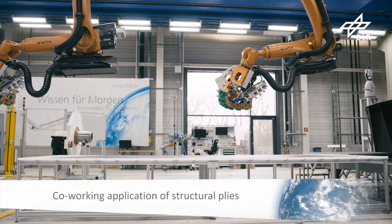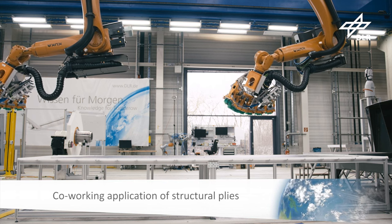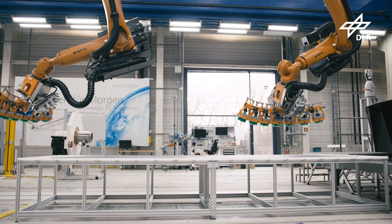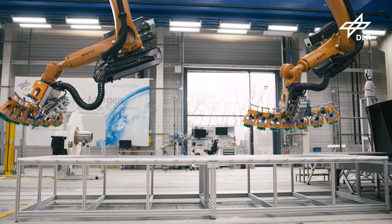The long structural plies can also be applied by two co-working robots. Therefore, both end effectors have to be adjusted to the target geometry of the tool.